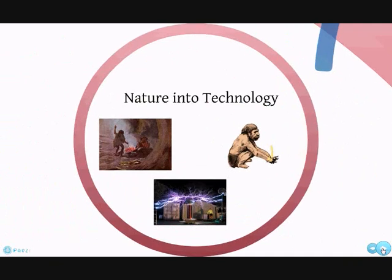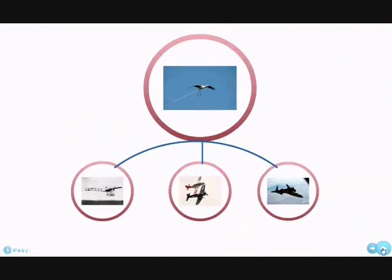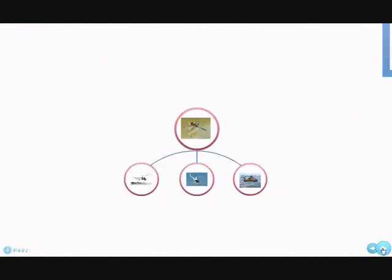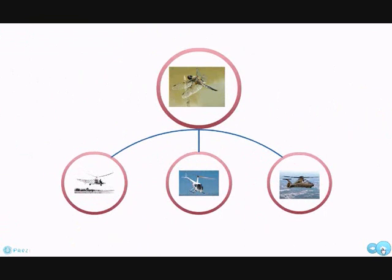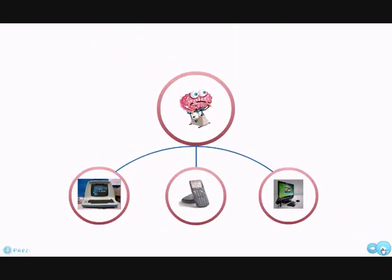Let's start. Throughout history, humankind have been known to copy things from nature's great creations and make artificial versions of them to benefit our daily lives. For example, we model airplanes after birds so we can fly. Then we learned to model helicopters after dragonflies, so now we can hover in midair. And computers, which we created to do our brain's work.